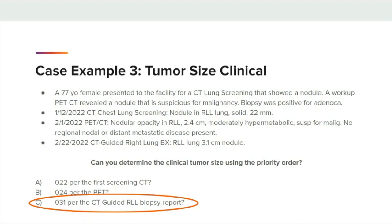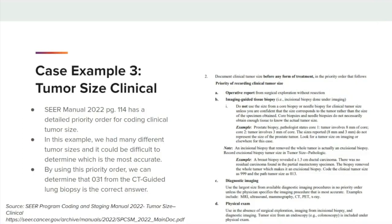The answer is C: 031 per the CT-guided right lower lobe biopsy report. The priority order for clinical tumor size is located in the 2022 SEER Program and Staging Manual under the tumor size clinical section, which can be seen on the right. First priority goes to the operative report from an exploratory procedure without a resection. Second priority goes to the image-guided tissue biopsy, which is an incisional biopsy done under the guidance of CT, ultrasound, or MRI. Please note that when coding the tumor size, the size should come from the imaging report and not the PATH report. CTRs should refrain from coding the size from a core biopsy or needle biopsy unless the size corresponds to the tumor and not the size of the specimen.